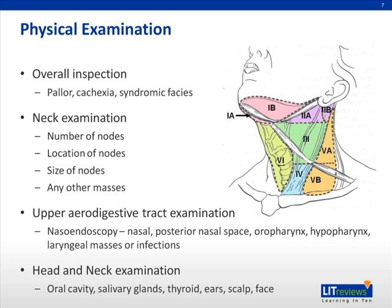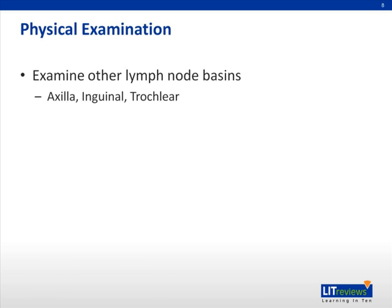We do not have to follow the exact sequence of the examination from the neck to the head and neck exam. If there is an obvious tumor of the neck, such as a thyroid lump, then logically that should be examined first prior to nasal endoscopy. If there is no obvious primary lesion to account for the cervical lymphadenopathy, or if there are multiple bilateral cervical lymph nodes, then other lymph node basins should also be inspected, as lymphoma is a high possibility.